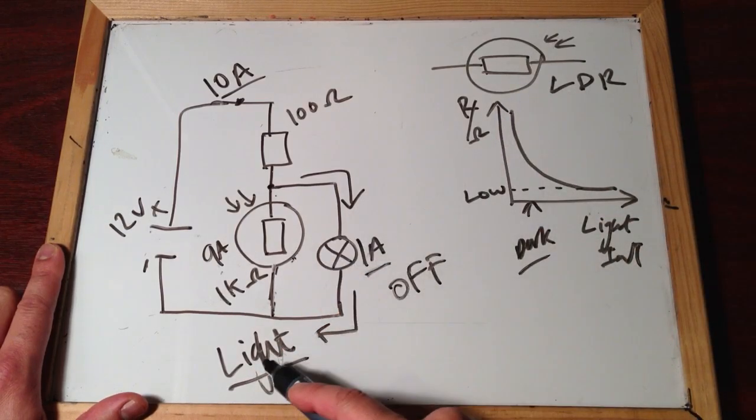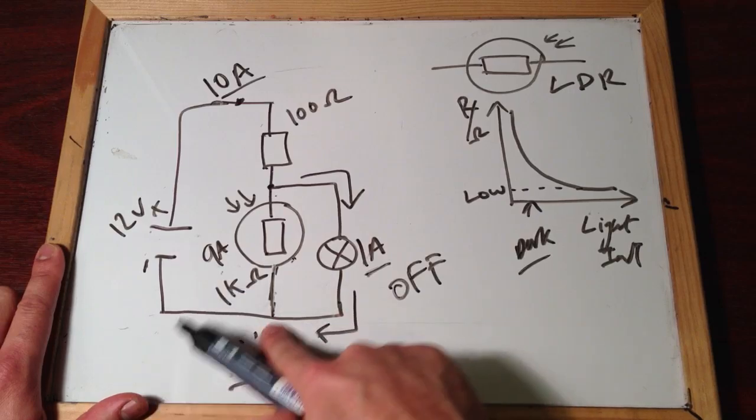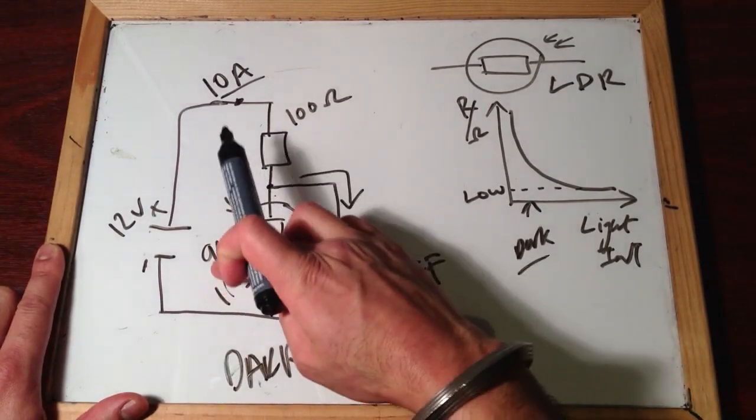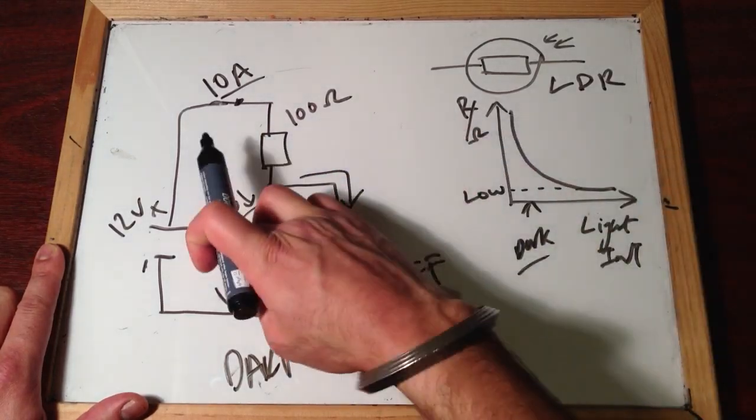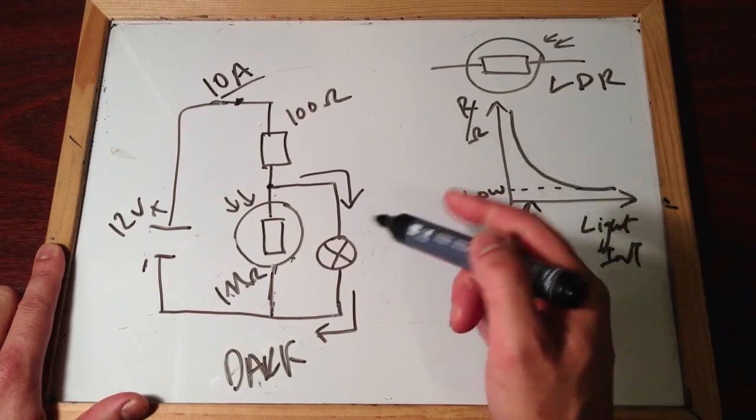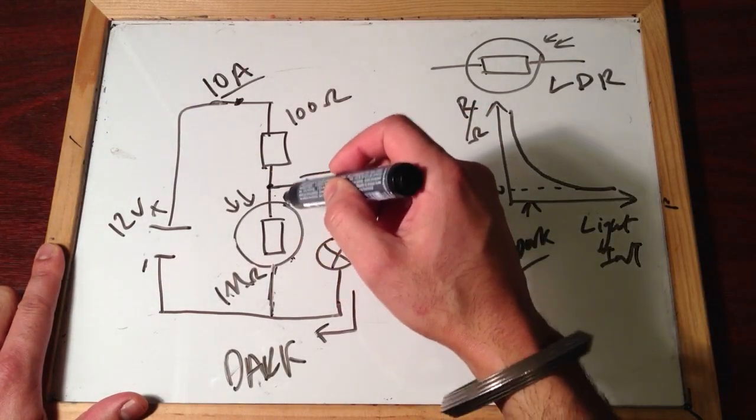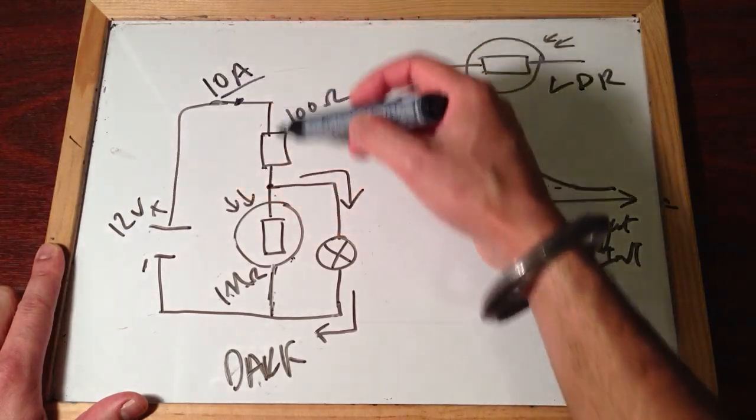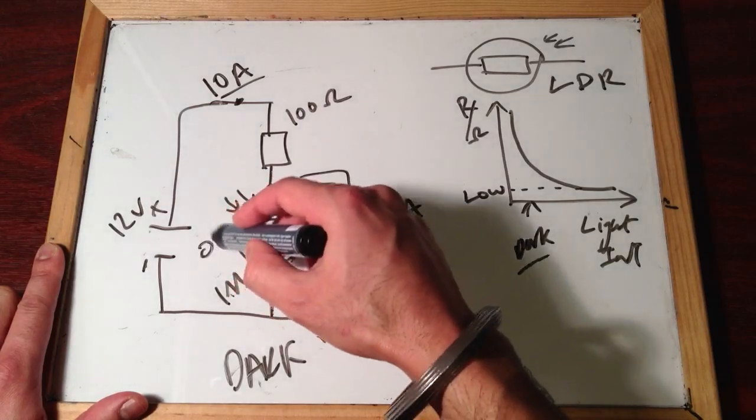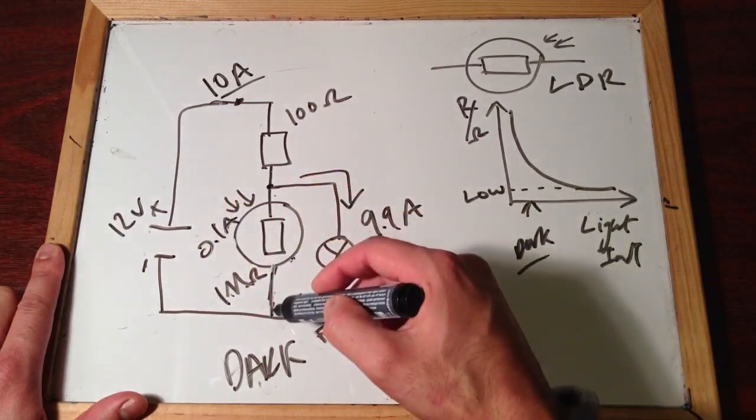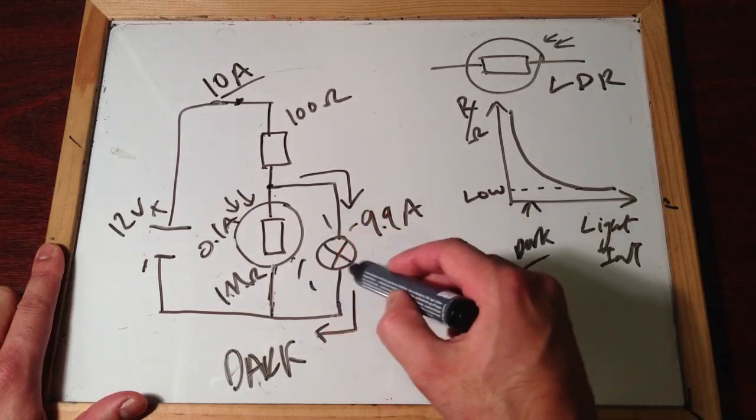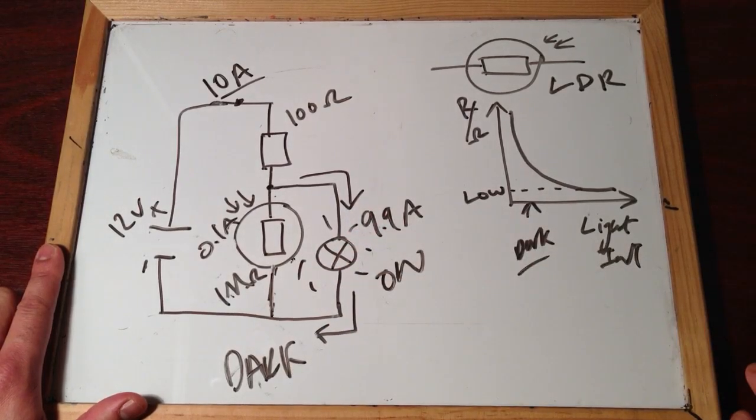So, this 1 amp means that the bulb stays off when it's light. That's exactly what we want. We want the bulb to stay off when it's daylight, and when it's night time, when it's dark. This is going to change from 1,000 ohms to a million ohms. And because it's really high resistance, because it's really high resistance down here, that 10 amps, the current that's flowing through this circuit, you'd get about maybe 9.9 amps going down the bulb, and only 0.1 amps going through the LDR, because it's really high resistance. And all these 9.9 amps going through the bulb will turn it on, and that's what happens in the dark.